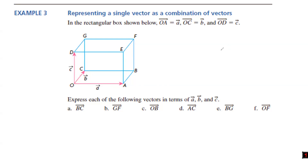Express each of the following vectors in terms of a, b, and c. First, vector BC. It starts here and travels to this point. Remember, the position of letters in the vector is important: the first letter is where the vector starts, and the second is where it's heading. So try to express what BC equals in terms of a, b, or c.